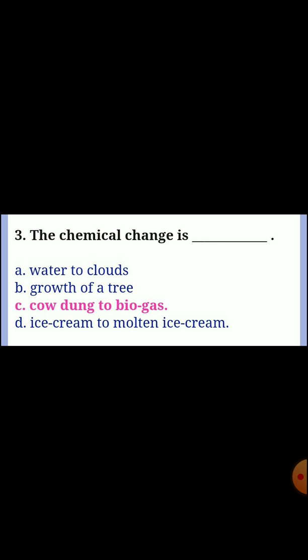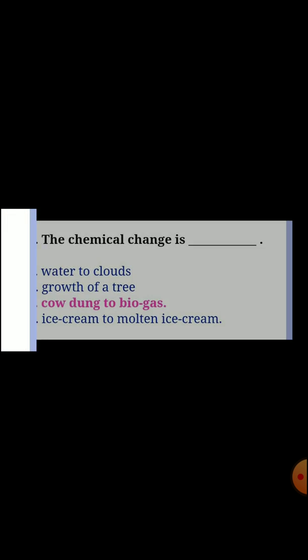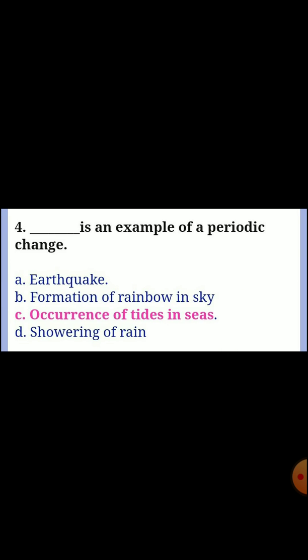Question three: the chemical change is? Answer C - cow dung to biogas. Question four: which is an example of a periodic change? Answer C - occurrence of tides in seas.